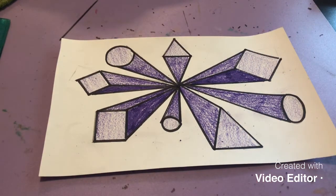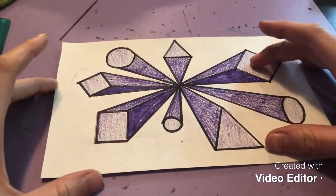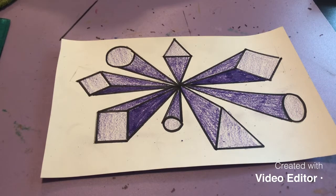So because it's an explosion I'm going to draw an explosion behind it and then trace it in marker and color it. If you want to approach it in a different way that's totally fine. But I do want you to do something with the negative space.